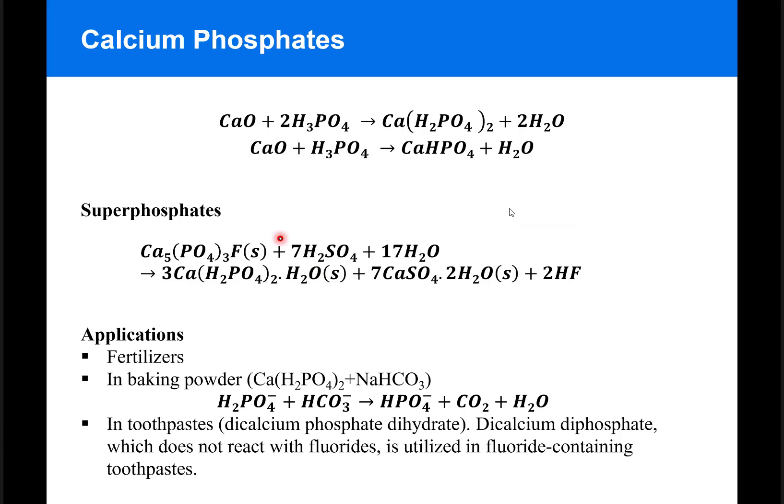Several calcium phosphates can be used in baking powder, which is typically a mixture of calcium dihydrogen phosphate with sodium bicarbonate. When these mix together in water, an acid-base reaction will take place.